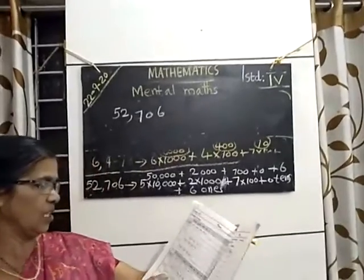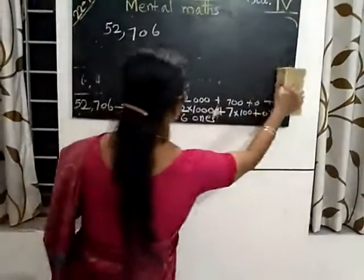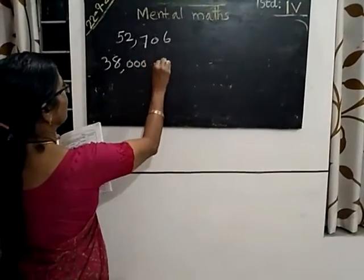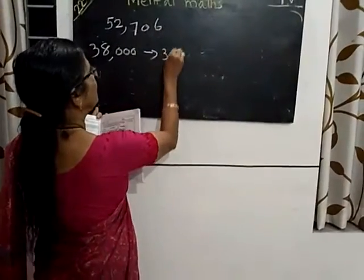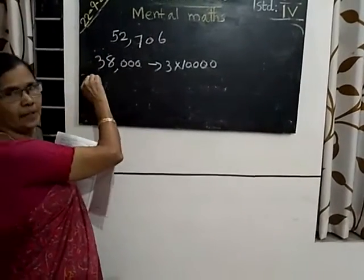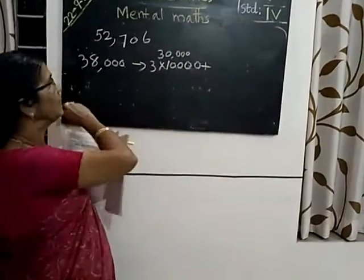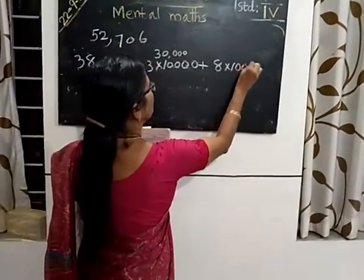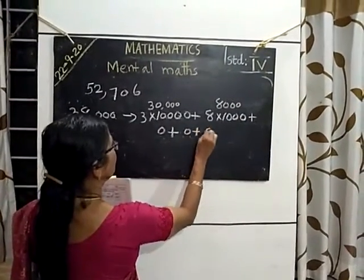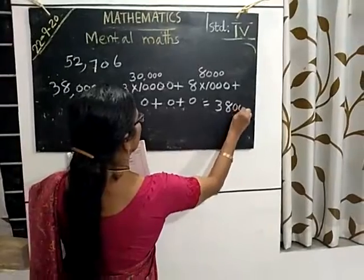Like that, you can do the next one also. 38,000. No need of expanding more digits. 38,000. 3 into 10,000. Once 10 is 10,000. 3 times 30, we will get 30,000 plus how many thousands? 8,000. 8 into 1,000. That is 8,000. Plus 0 tens, 0 hundreds, 0 ones. Then this total, we will get, is equal to 38,000.